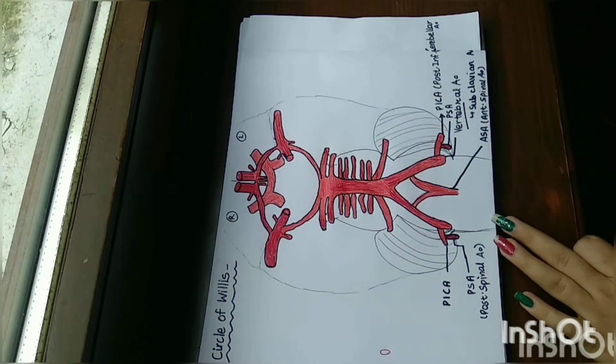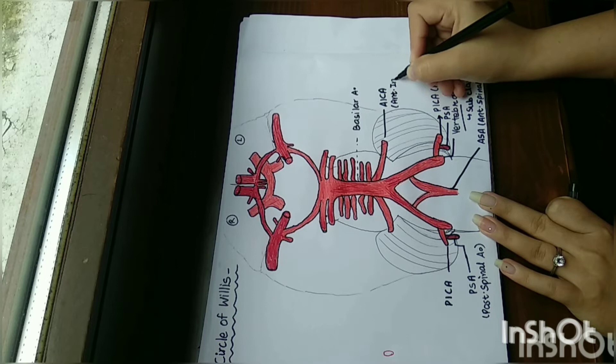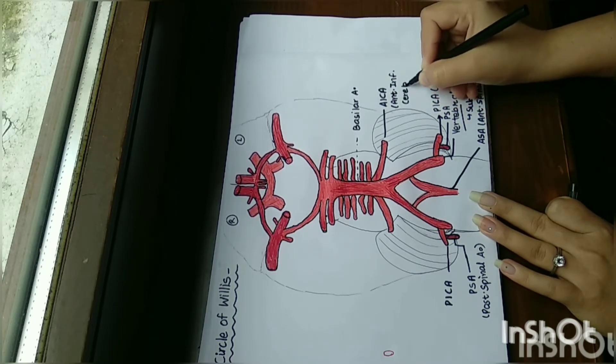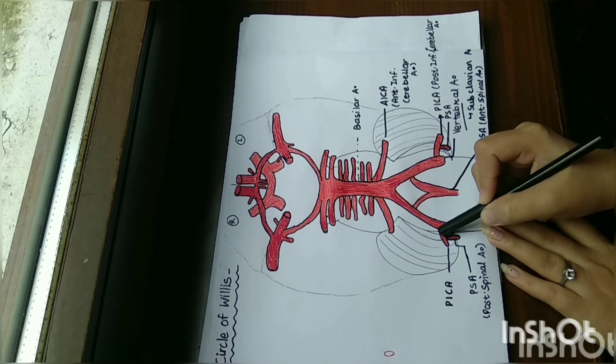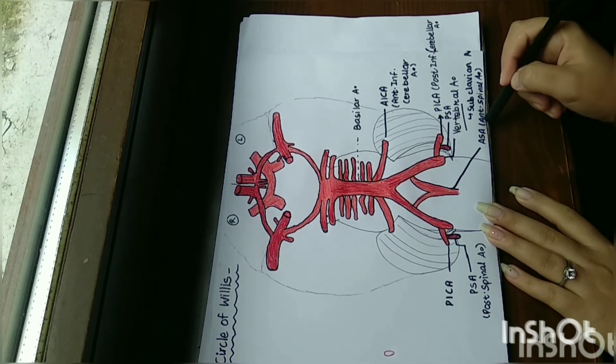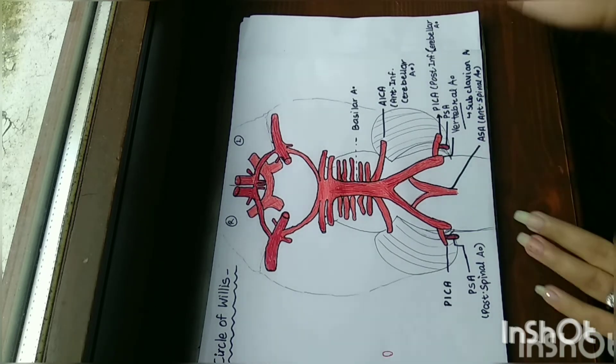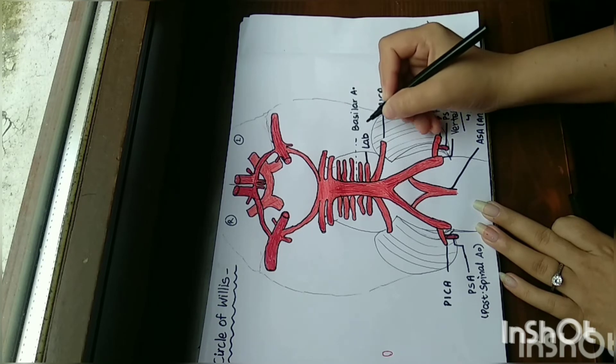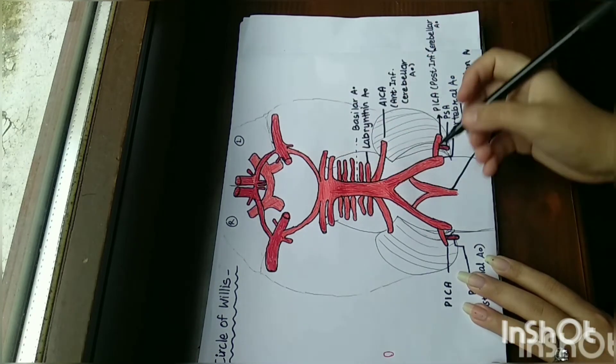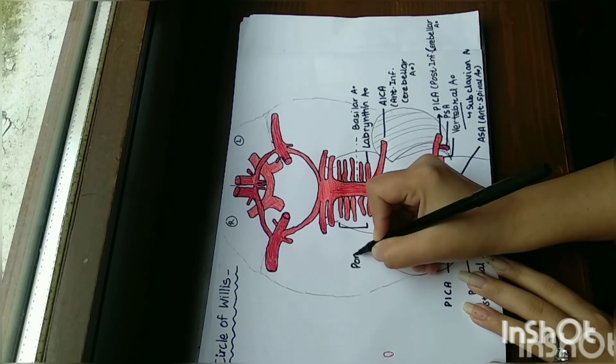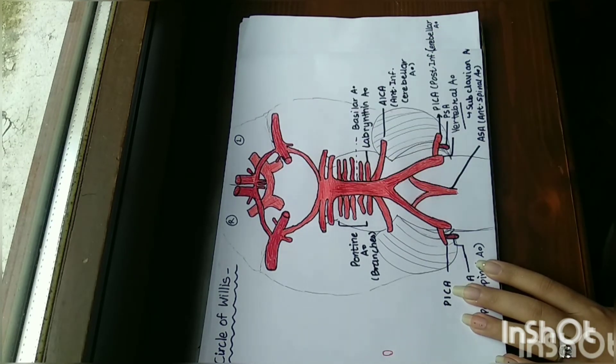This is the basilar artery. Here is AICA, the anterior inferior cerebellar artery. It gives labyrinthine arteries. As we continue, these are pontine arteries. Here is the medulla, pons, and the midbrain.